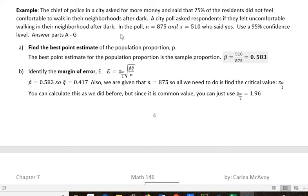Find the best point estimate of the population proportion. The best point estimate is the sample proportion, p̂. To find that, we take the number of yeses divided by the total number. So 510 divided by 875 gives us 0.583. That's the percentage in our sample that said they felt uncomfortable walking around at night.